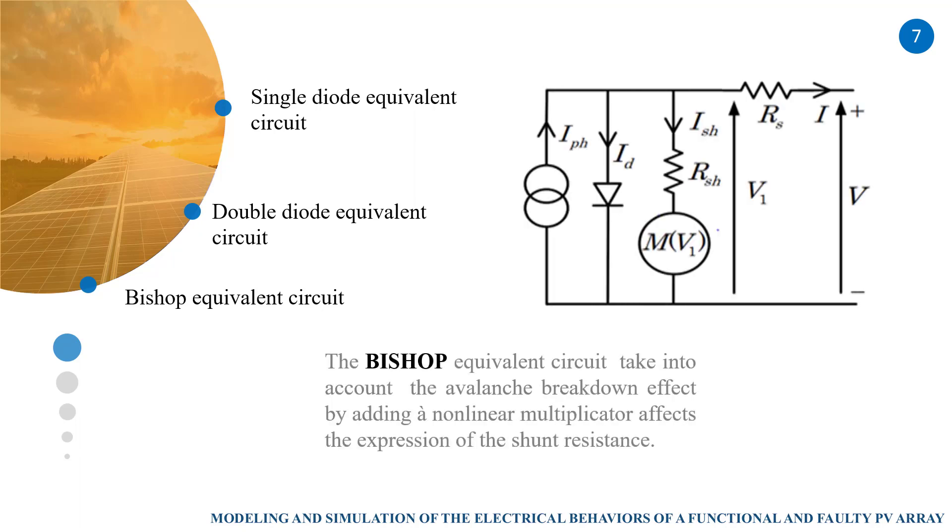In our case, we choose the Bishop equivalent circuit because it can describe the system in all operating regimes by taking into account the avalanche breakdown effect.